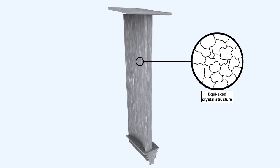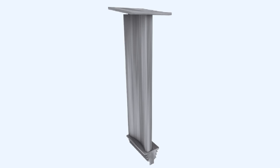Traditional metal manufacturing processes produce a crystal lattice or grain in the material. The boundaries of the crystals create a weakness in the structure and are usually the starting point of any failure. Some turbine blades are manufactured by the process of powdered metallurgy, in which powdered super-alloys are hot-pressed into a solid state. The blades thus produced have long, slender crystals and are very creep-resistant.